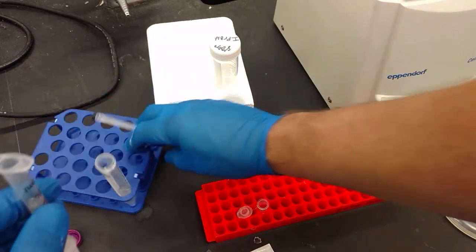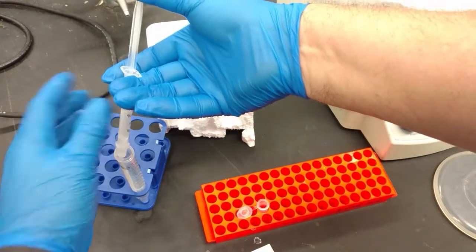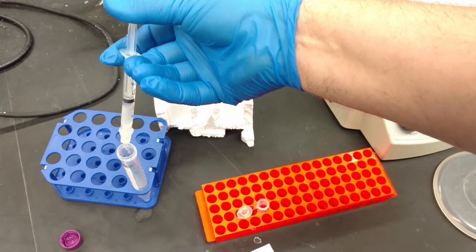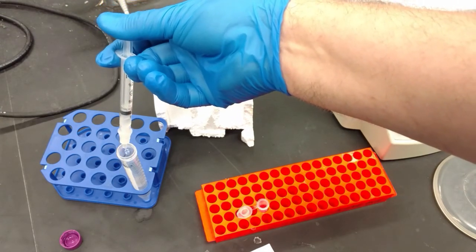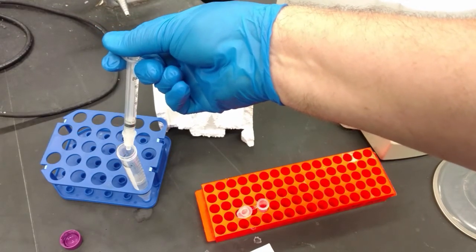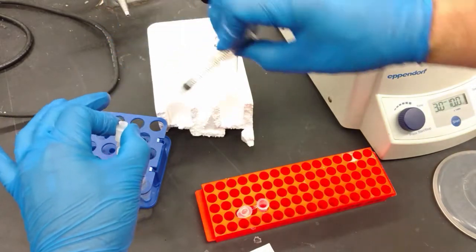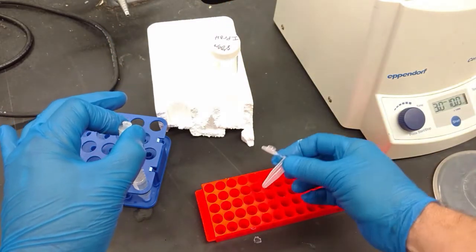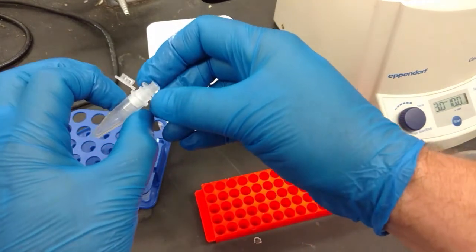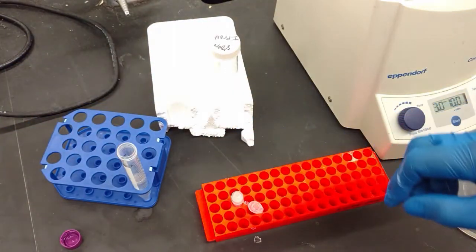And we can use that 15 mil tube for waste. And you just push it through. Just like with the filters, never pull back on the plunger, always disassemble it. And so now we have our column, and it's got your DNA on it. And so what we have to do now is dry it.